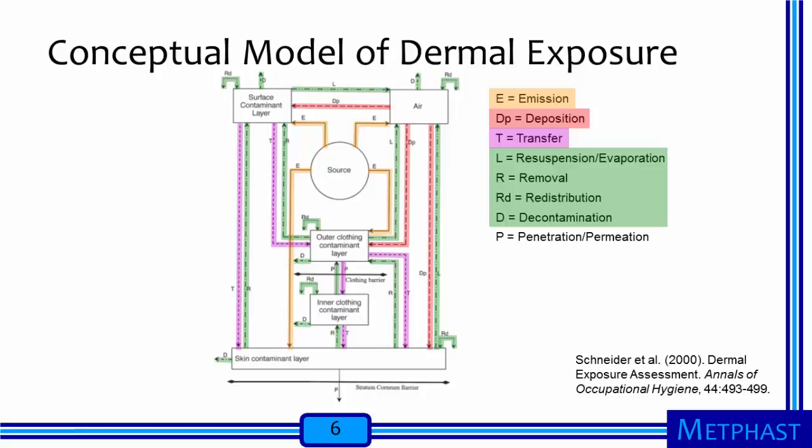Decontamination is deliberate removal of a material from one of the compartments. Examples include wiping a work surface, laundering clothes, washing hands, and taking a shower. Finally, highlighted in blue, materials can pass from the skin contaminant layer through the stratum corneum — the topmost layer of the skin — and enter the body.